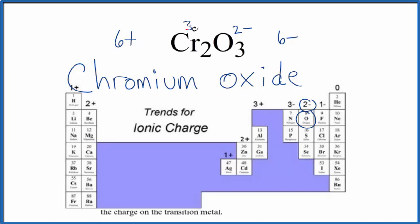Two times 3+, that would give us 6+. 6+, 6-. So the chromium has an ionic charge, each one of them, of 3+.